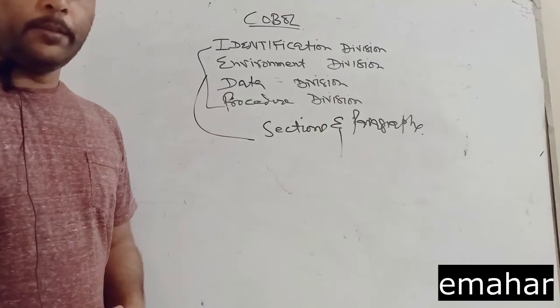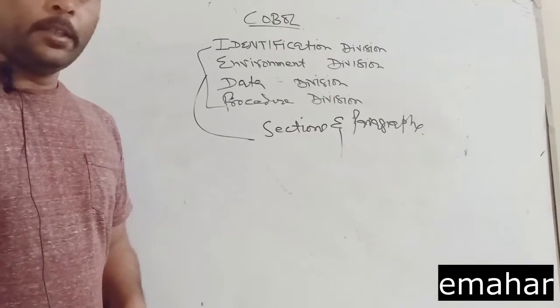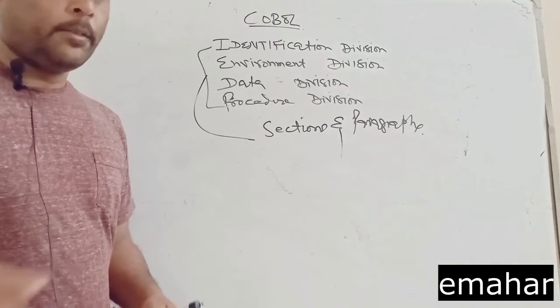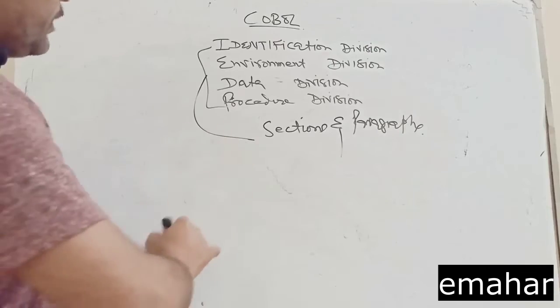COBOL programs are written in fixed format. In fixed format, the COBOL source format divides each COBOL source record into 72 columns.